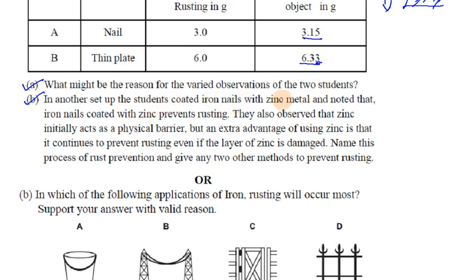In another setup, students coated iron nails with zinc metal to prevent rusting. They observed that zinc initially acts as a physical barrier. However, an extra advantage of using zinc is that it continues to prevent rusting even if the layer of zinc is damaged.